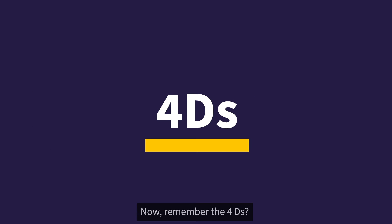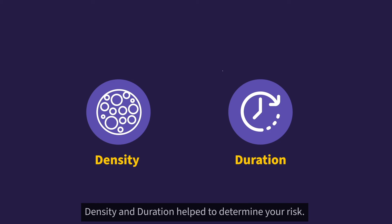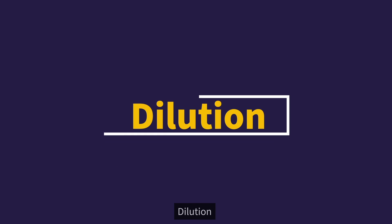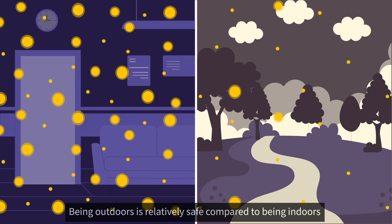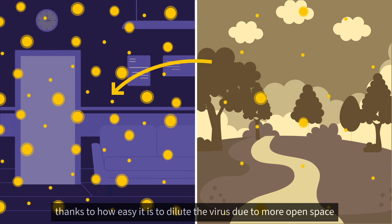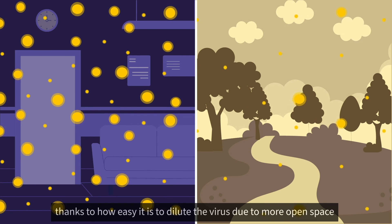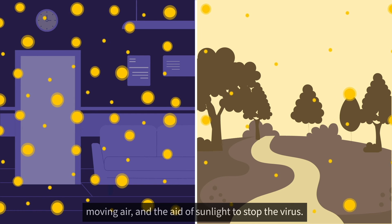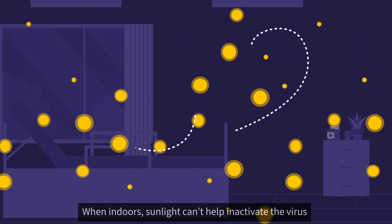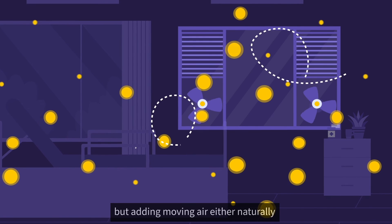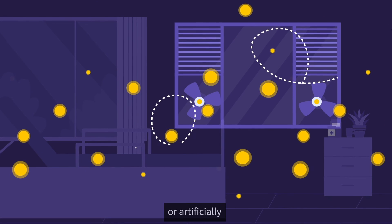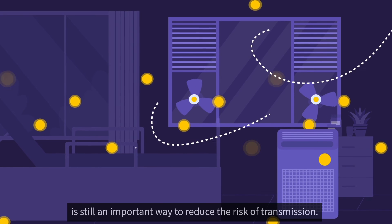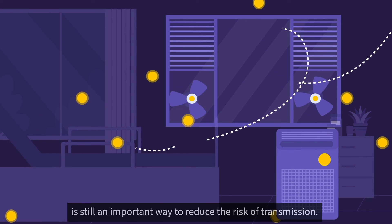Remember the four D's? Density and duration help to determine your risk, while dilution and distance can help manage it. Being outdoors is relatively safe compared to being indoors, thanks to how easy it is to dilute the virus due to more open space, moving air, and the aid of sunlight to stop the virus. When indoors, sunlight can't help inactivate the virus, but adding moving air — either naturally through open doors and windows, or artificially using an HVAC system or a standalone HEPA air filter — is still an important way to reduce the risk of transmission.